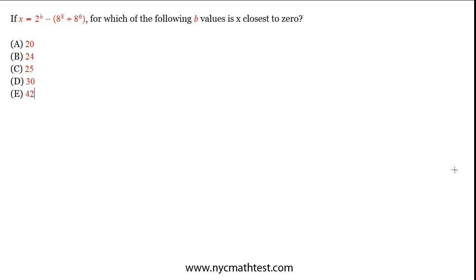Hi, this is Dan Molloy, continuing with GMAT Math Quant. If x equals 2 to the b minus 8 to the 8th plus 8 to the 6th, for which of the following b values is x closest to 0?